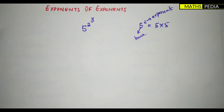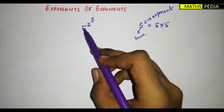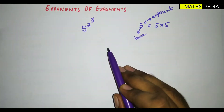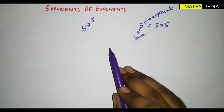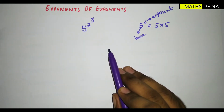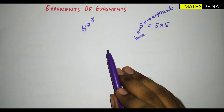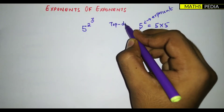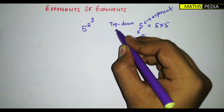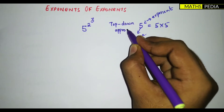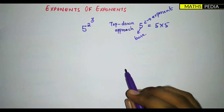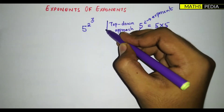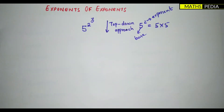We now understand the meaning of exponent. So, for 5 squared to the power 3, how do we calculate this? There are different methods people use, but the only logical or exact method is the top-down approach. That means you start from the top and go down.